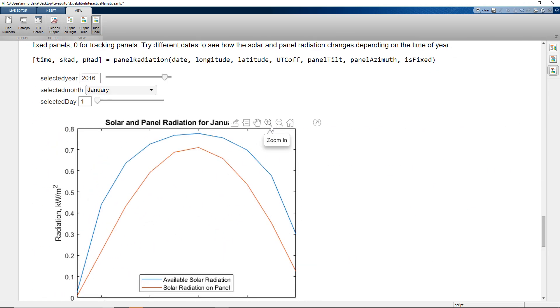As we scroll down the Live Script, we see that we have a plot to visually see the performance of the solar panel at various times of the day. This plot will change depending on the values used during the calculation.